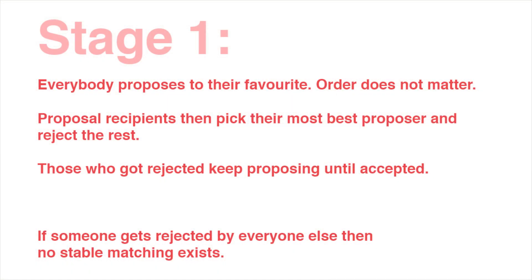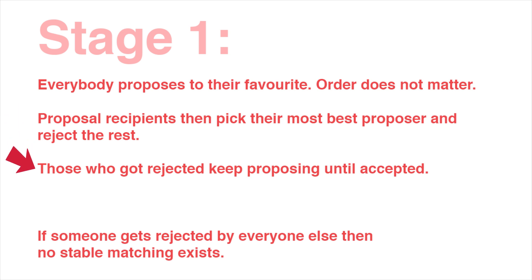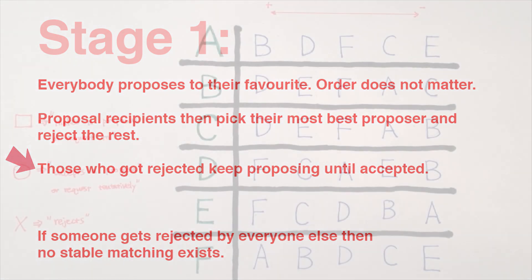Before I start, I would like to clarify that we don't have enough time for proofs on why things work. If you want to know more, you can refer to Irving's paper, which will be referenced at the end of this video and in the video description. So, the first stage of Irving's algorithm says that every participant proposes to their most preferred partner who has not yet rejected them. The recipients of this proposal will say yes or no based on whether they have also received proposals from other more preferred partners. This process repeats until everybody has made a successful proposal.